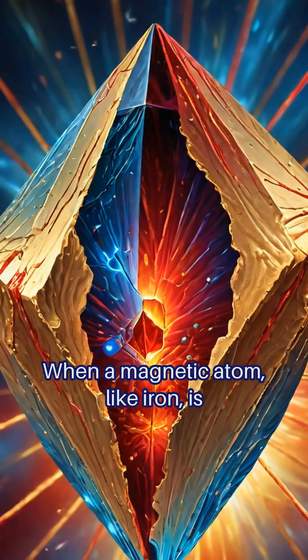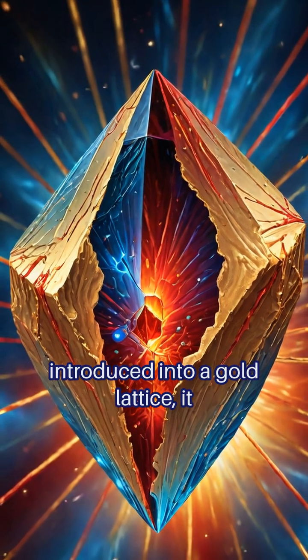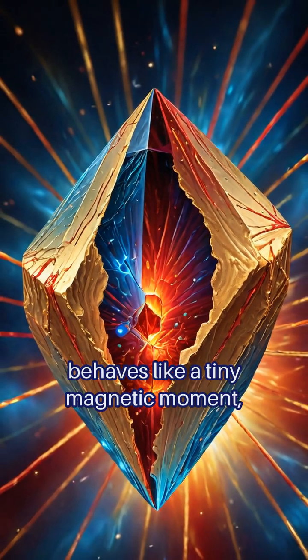When a magnetic atom like iron is introduced into a gold lattice, it behaves like a tiny magnetic moment, altering how electrons move.